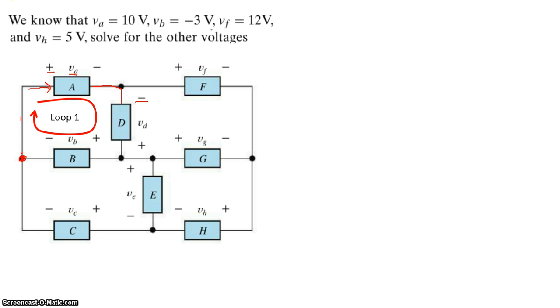As I walk through that element and into B, I encounter a positive sign for VB first and the magnitude, and then I get back to where I started from. So loop one expression is plus VA minus VD plus VB.